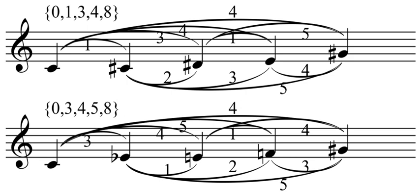To put a set in normal form, begin by putting it in normal order, and then transpose it so that its first pitch class is 0.